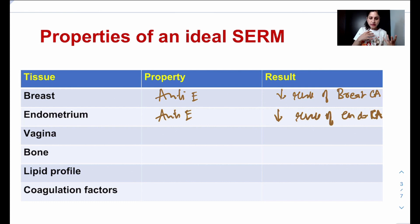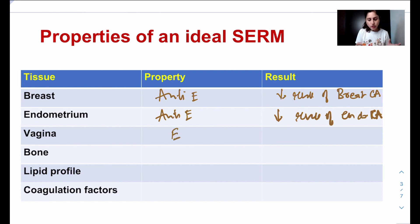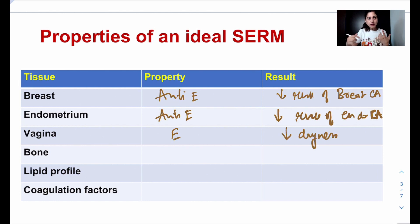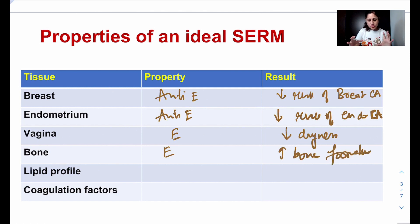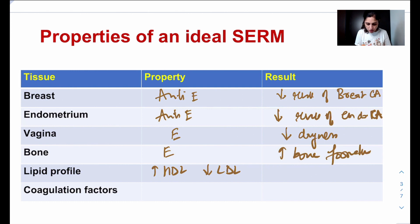For the vagina, estrogen prevents dryness, which is a good thing — dryness can cause pain and infections. So an ideal SERM should have an estrogenic effect on the vagina to decrease dryness. On bone, estrogen is a bone-forming hormone, so the ideal SERM should be estrogenic on bone to increase bone formation. For lipid profile, estrogen increases good cholesterol (HDL) and decreases bad cholesterol, making it cardioprotective — the ideal SERM should mimic this effect.